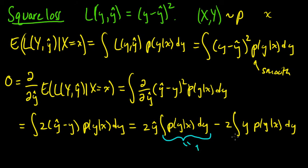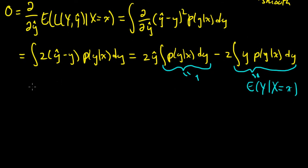And this is the definition of the expectation, or rather, the conditional expectation of y given x. So this is the expected value of y, given that x equals little x. So this is looking nice. And now we've set this equal to 0. So we can just divide by 2, and solve for ŷ.